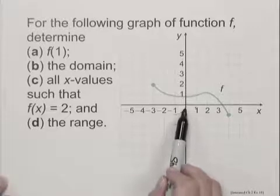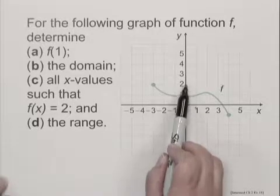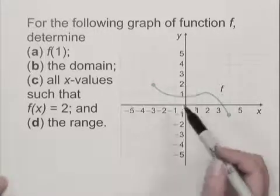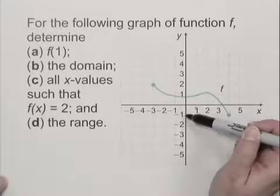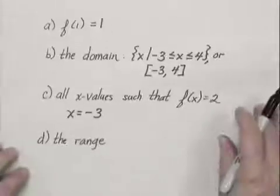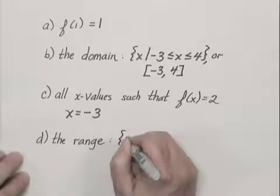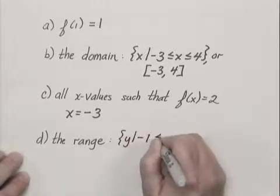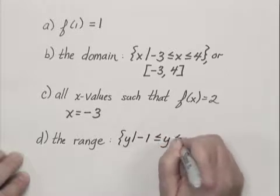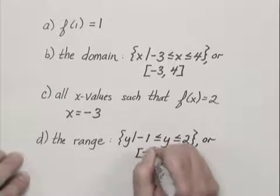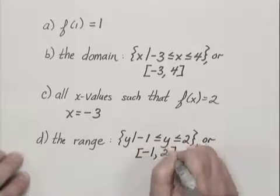As we continue to move up, we see there are points on the graph all the way up to y is 2, and no further. So the set of all y values in the graph extends from negative 1 to 2. So the range is the set of all y such that negative 1 is less than or equal to y, and y is less than or equal to 2, or the interval from negative 1 to 2.